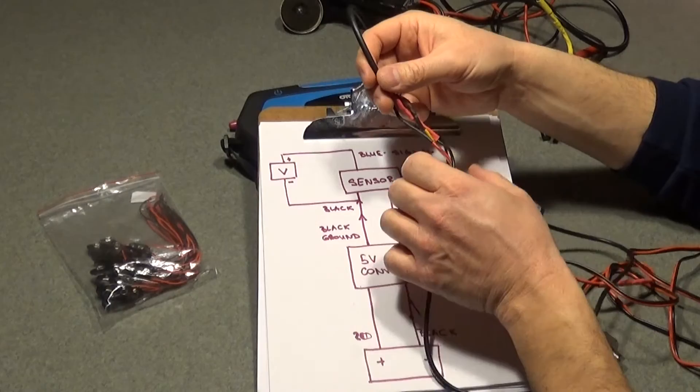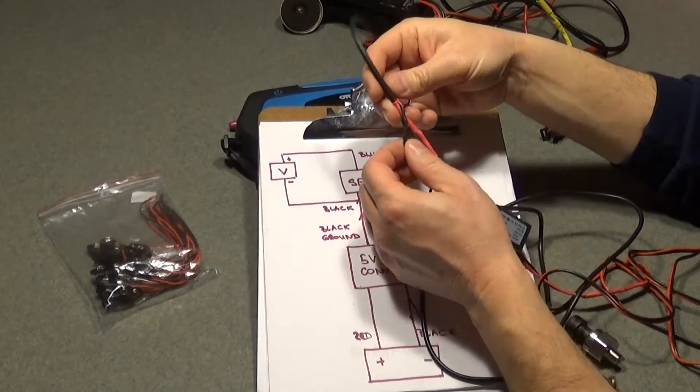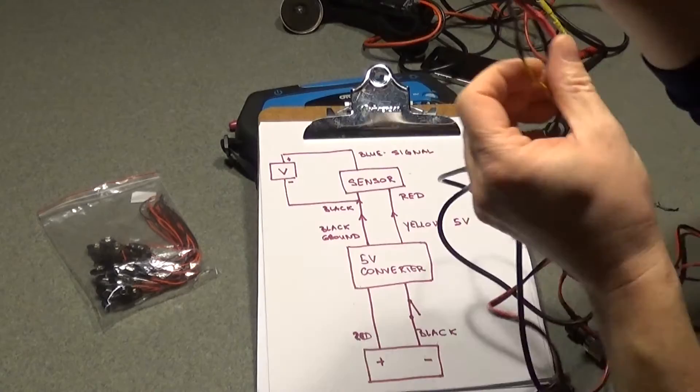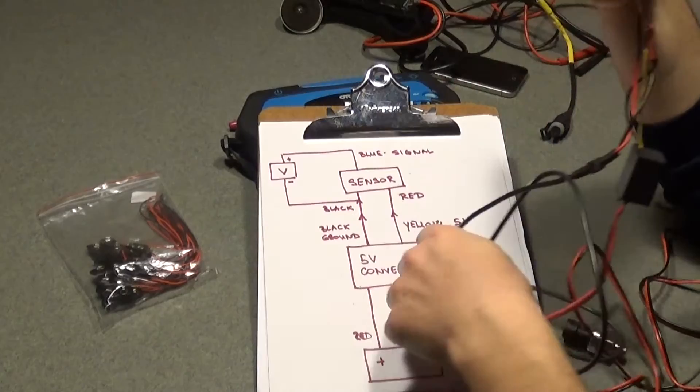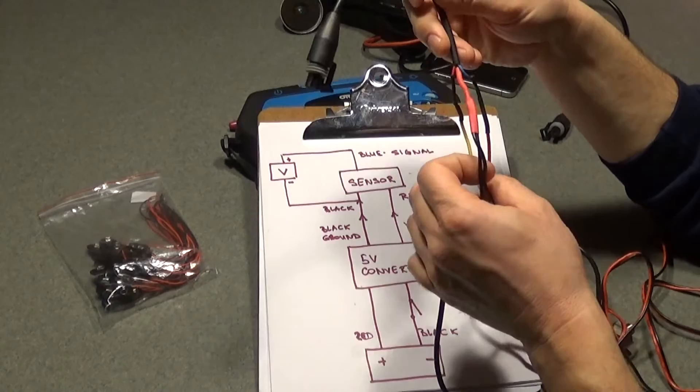Now the yellow wire, that's basically the 5 volts that comes from the converter, is going to be hooked up, connected to a red wire on your harness. Okay, so yellow from the converter to red, to your harness, alright. So yellow goes to red, okay.